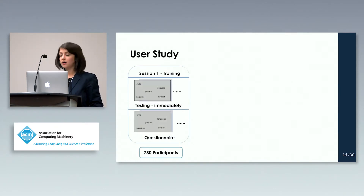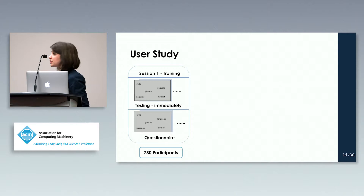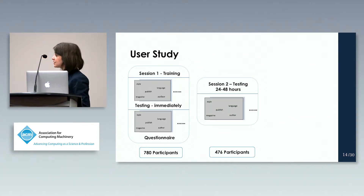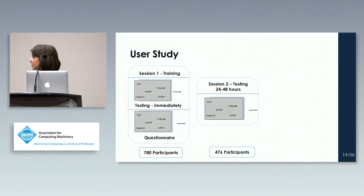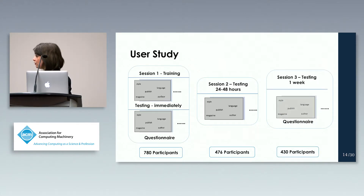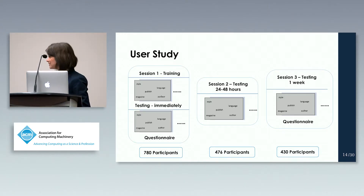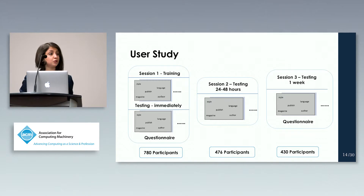We conducted a user study with 780 participants on Amazon Mechanical Turk. Participants started with the training session, and each user was randomly assigned to a condition. After that, users completed an immediate testing session, followed by a demographic questionnaire. A second login session was held 24 to 48 hours later with 476 participants, and 430 participants returned one week after training for another login session and a questionnaire about their perceptions toward the system.